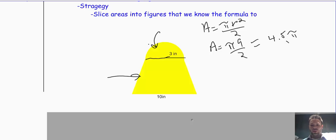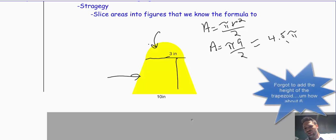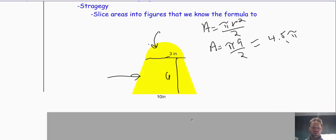Next, we have the trapezoid. The trapezoid formula is base 1 plus base 2, divided by 2, times the height of the trapezoid.